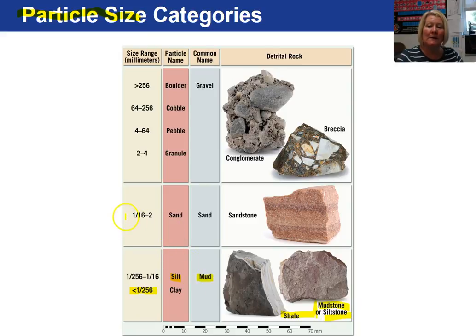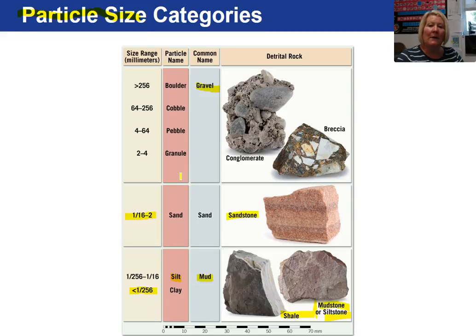The next particle size is 1/16 to 2 millimeters, and that's sand. When sand gets cemented together, it becomes the sedimentary rock sandstone. Anything larger than 2 millimeters is considered gravel, which is further broken down into different size categories. When gravel is cemented together, it can become either a conglomerate or breccia, depending on the shape of the particle — angular for breccia, rounded for conglomerate.